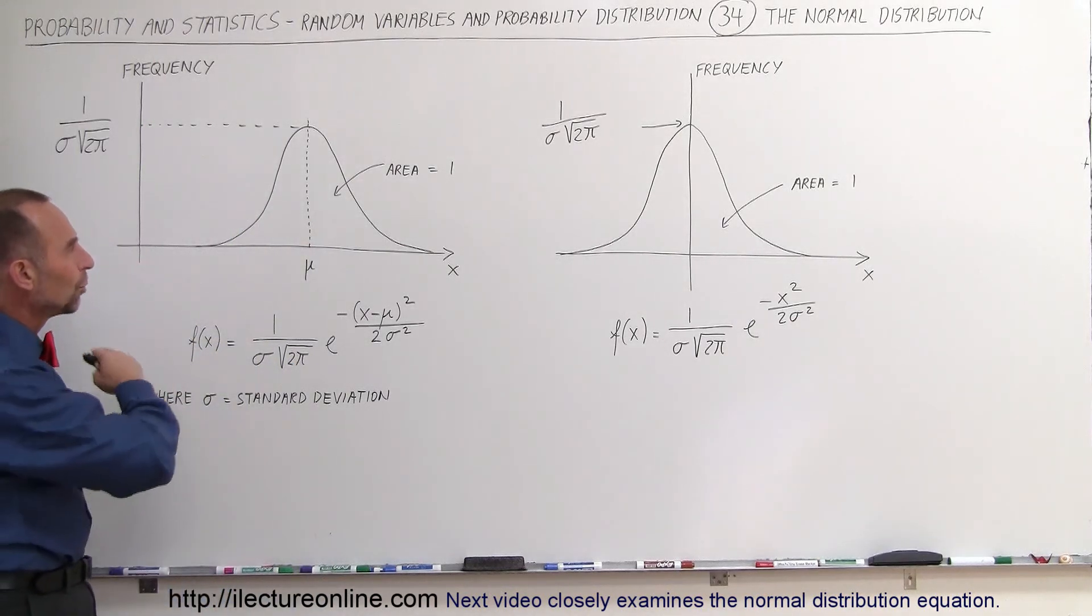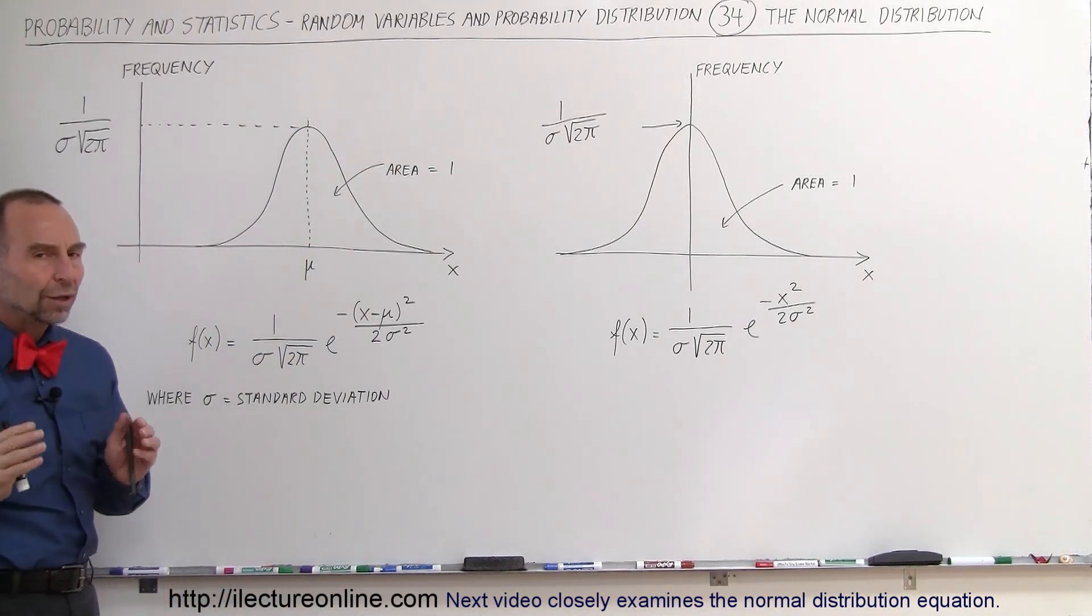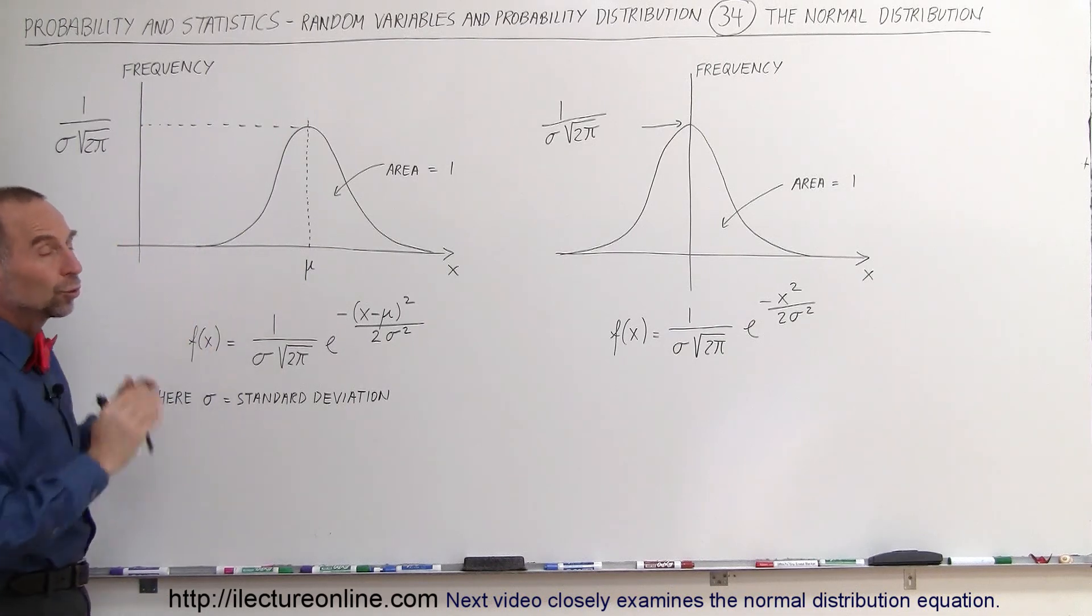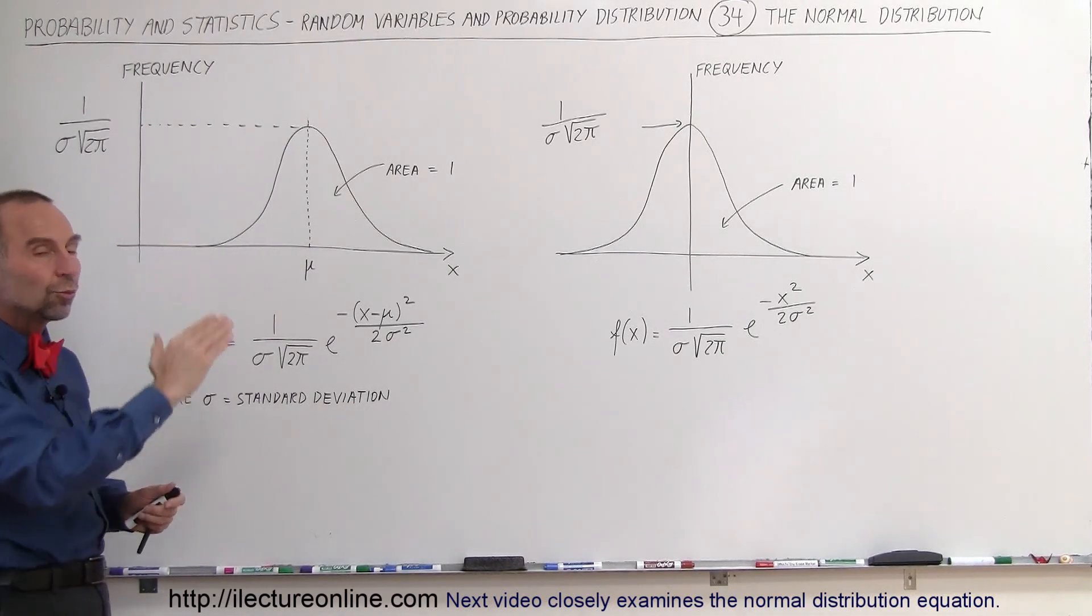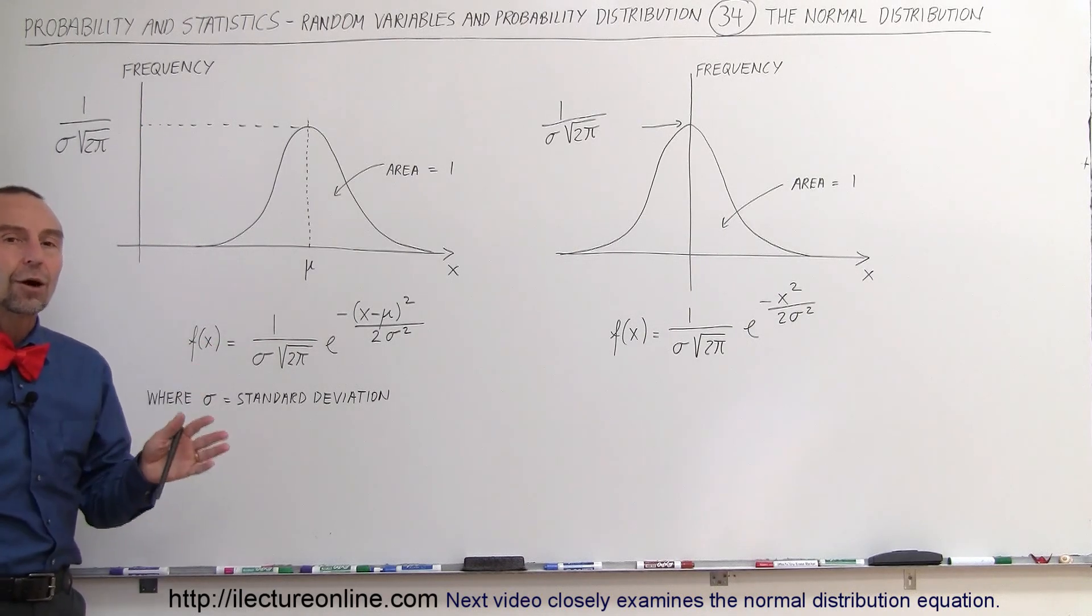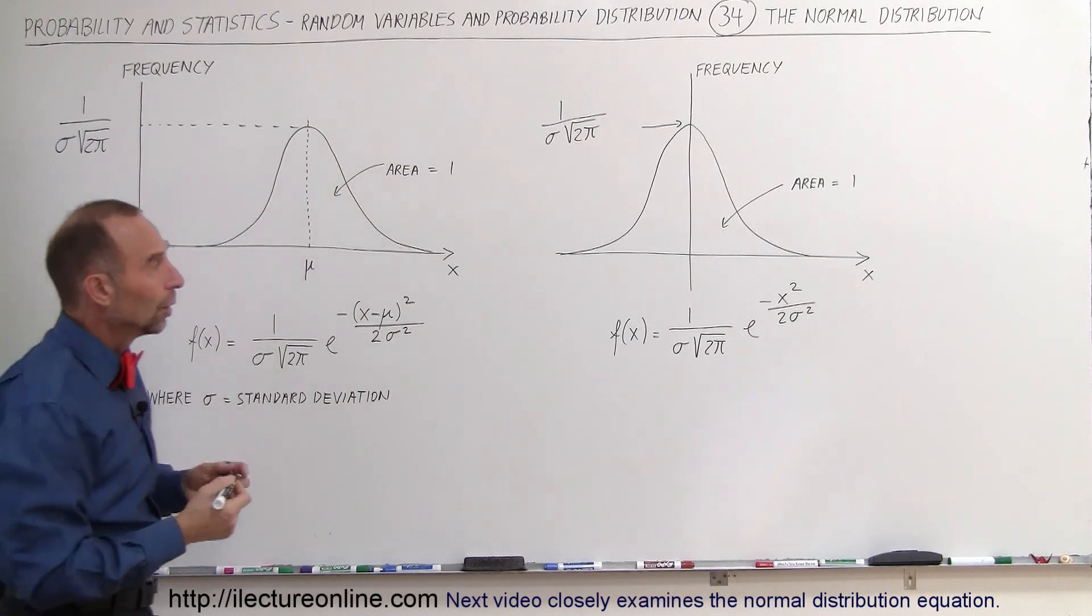Why do we do that? Why do we have a normal distribution like that? Why do we have it such that the total area equals 1? Because if we do that, we can then use this equation and use this distribution to find the probability of certain events occurring.